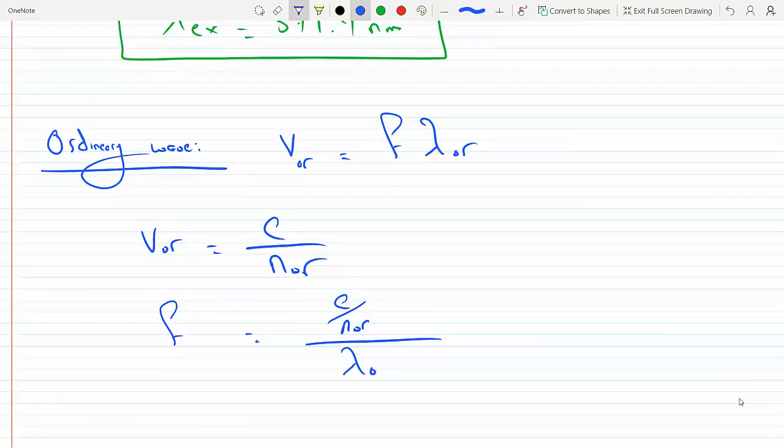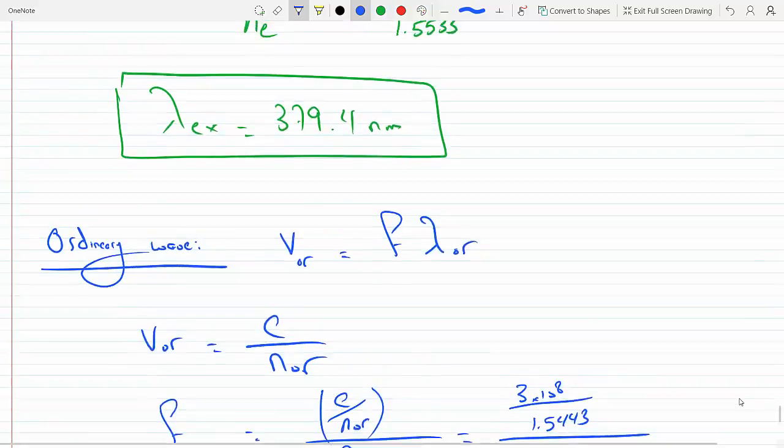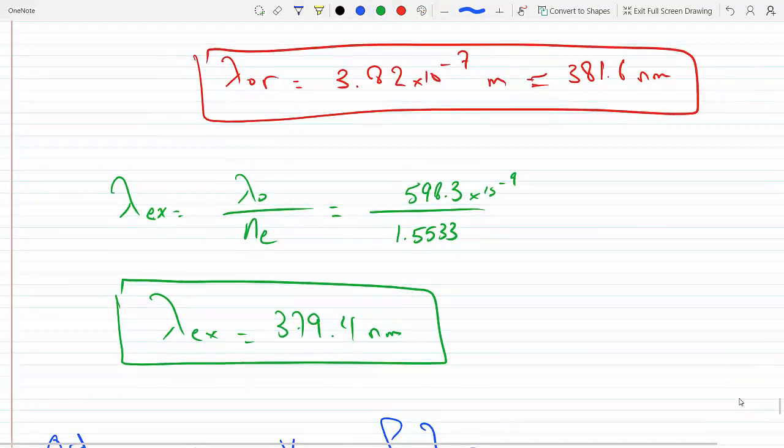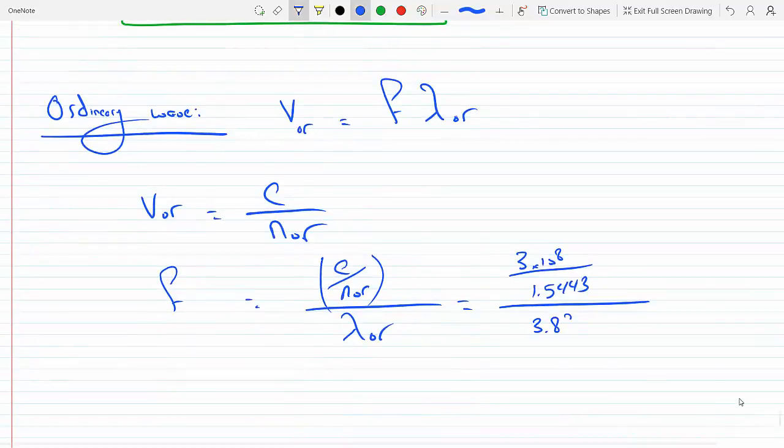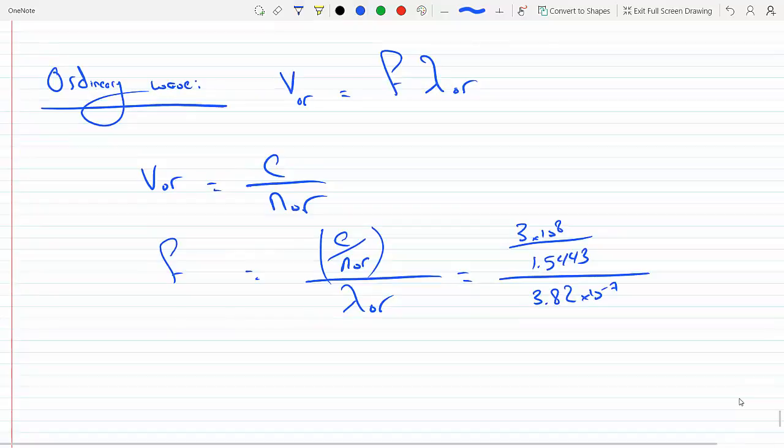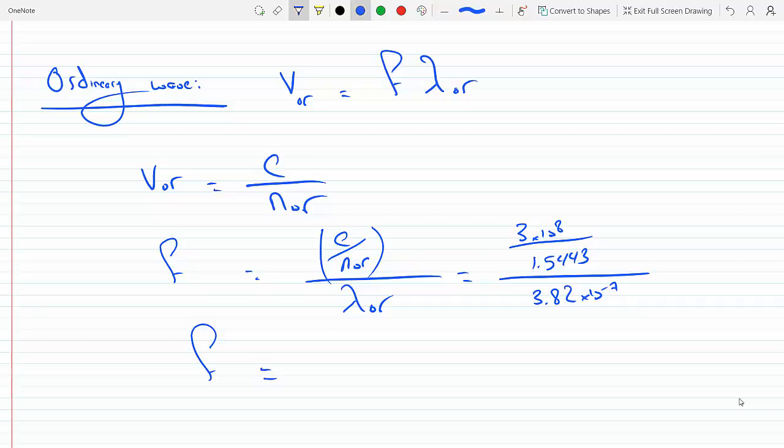So the frequency will equal c over n_or divided by λ_or. Plugging it in, we will get 3 times 10⁸ over n_or, that's 1.5443, divided by λ which we got is 3.82 times 10 to the minus seven. When we do that, we find the frequency to be 5090 times 10¹¹ hertz.